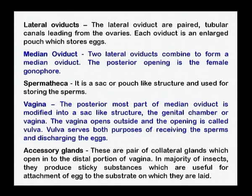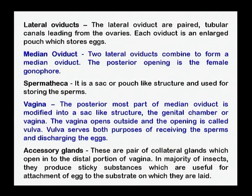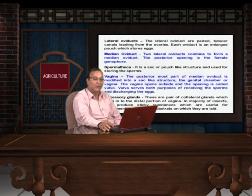The common oviduct leads posteriorly and opens into the vagina of the female insect, which is surrounded by a sac-like or pouch-like structure known as spermatheca. The vagina, spermatheca, and oviducts are all covered by accessory glands, also known as collateral glands. The secretion of these glands is very important because it produces a sticky substance useful for attachment of the egg to the substrate or place on which they are laid.